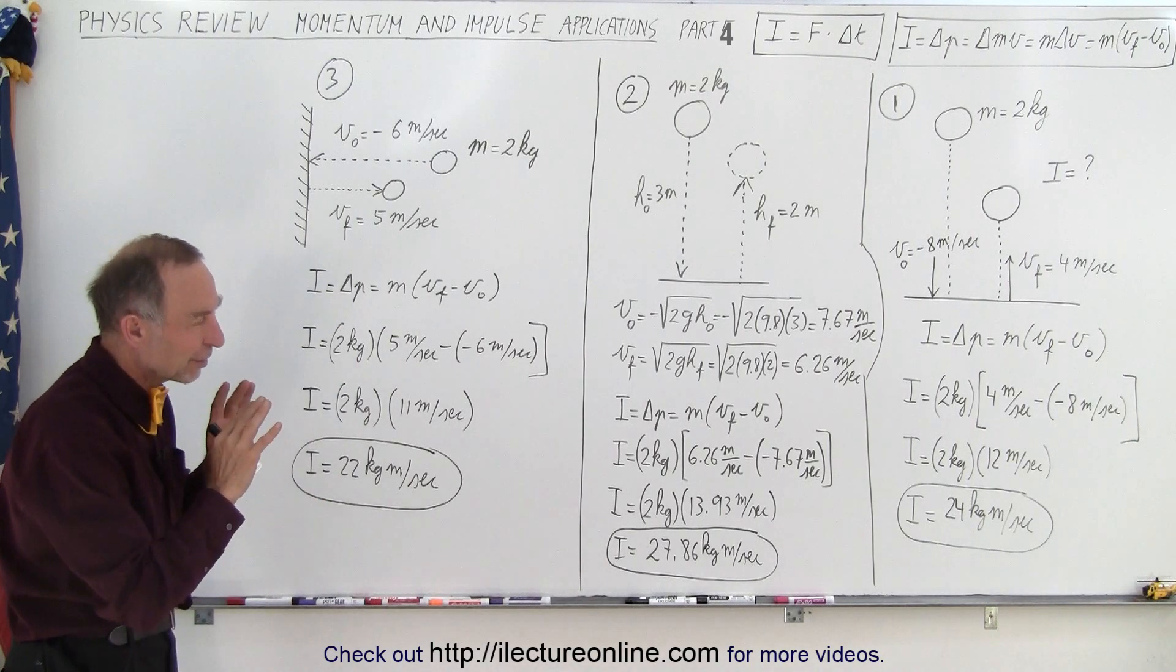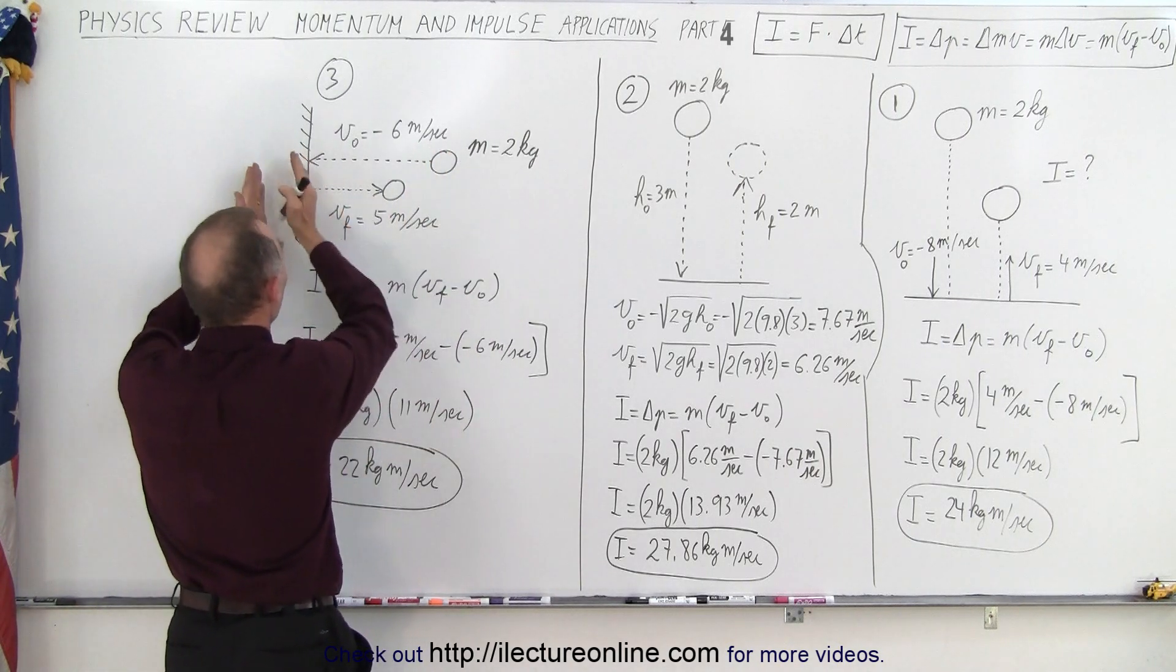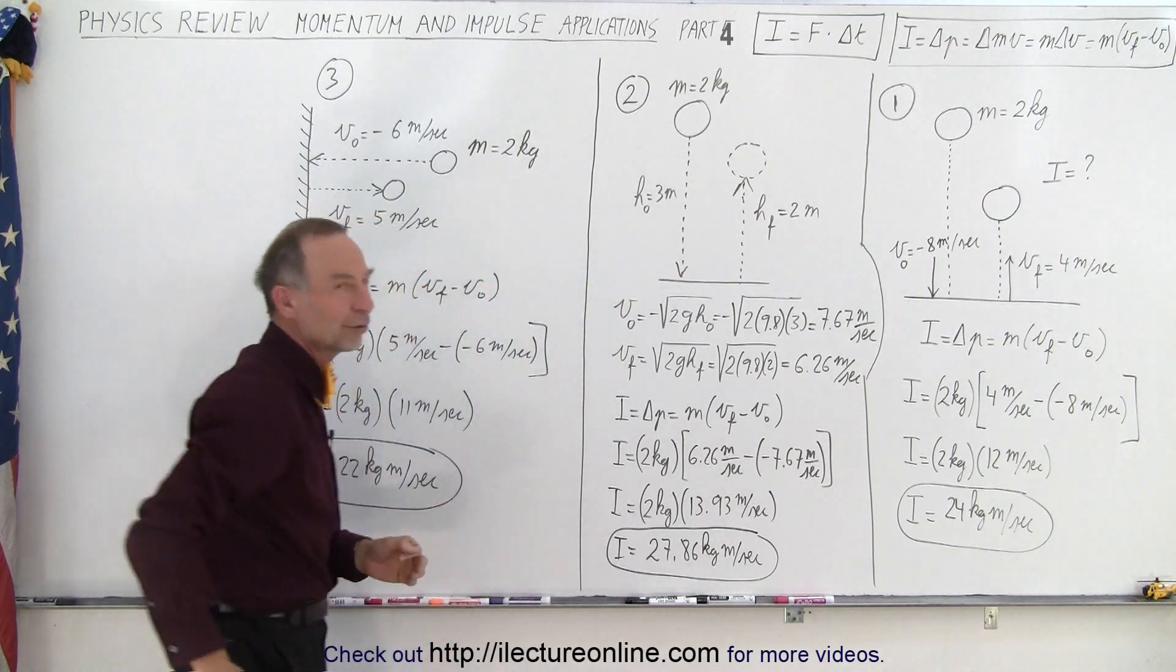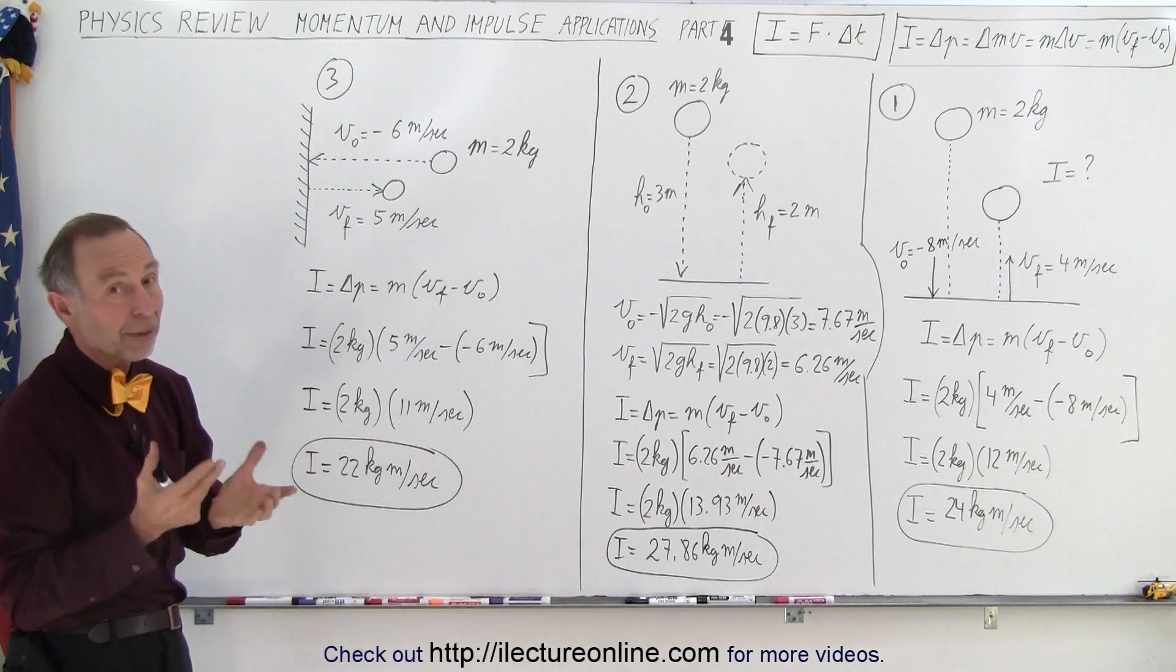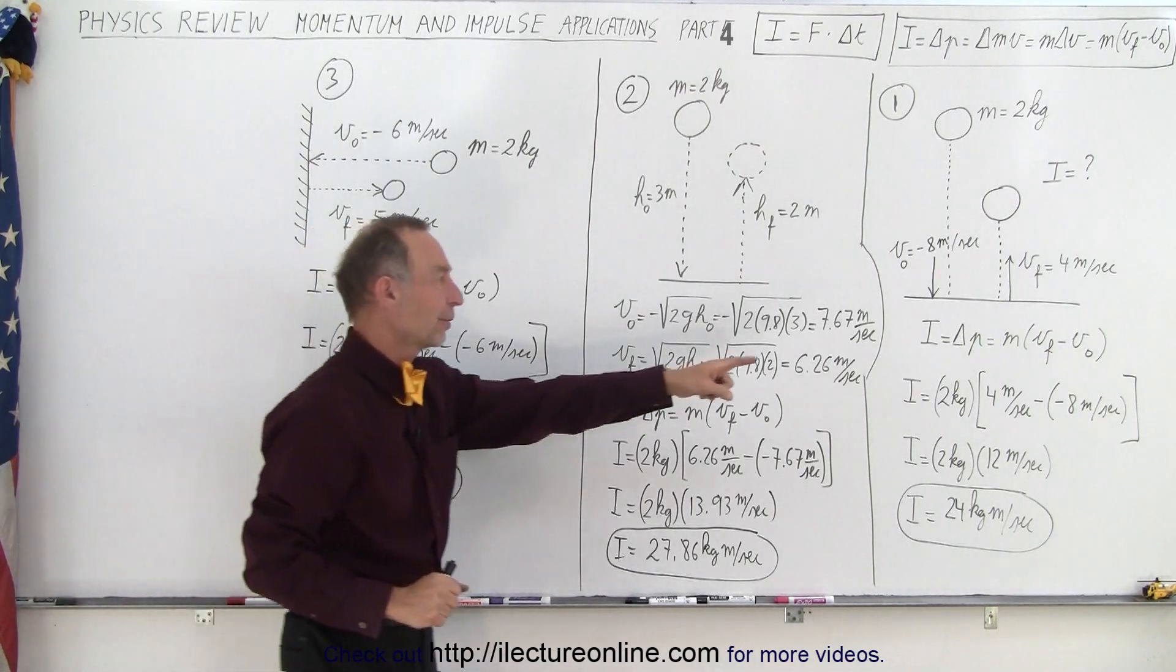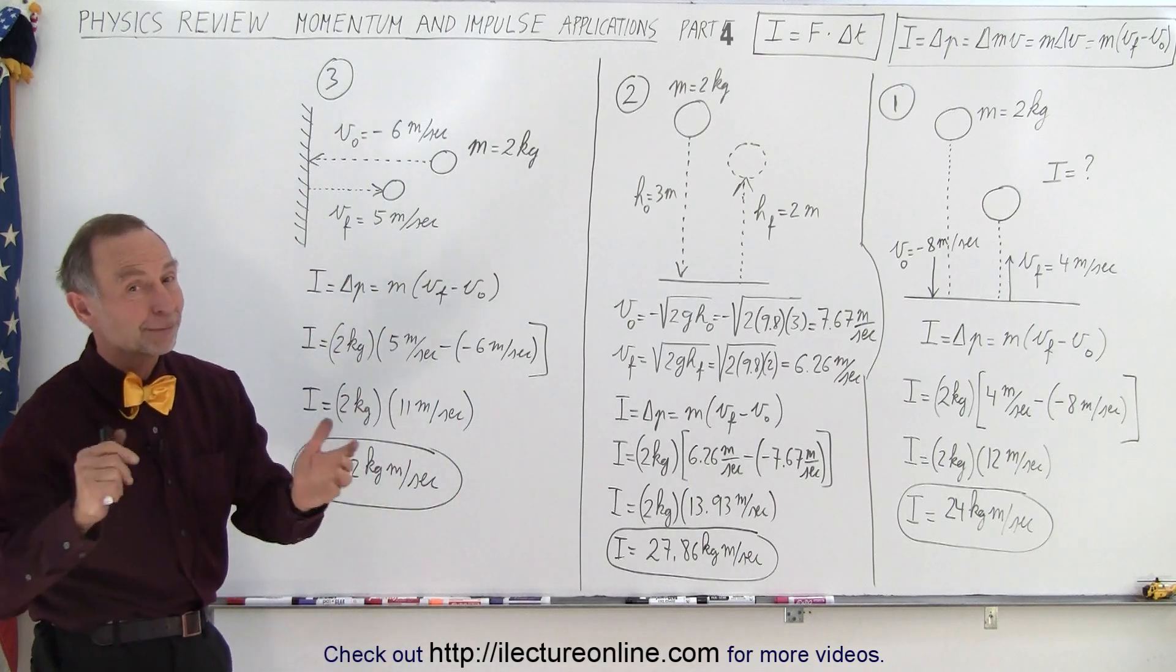Notice that momentum is not conserved when we isolate the object, the ball itself. But if we take the ball and the wall which is attached to the earth, or the ball and the floor which is attached to the earth, then in itself momentum is conserved. But isolating the ball, momentum is not conserved, and therefore impulse can be considered to be the change in momentum, and that is how it's done.